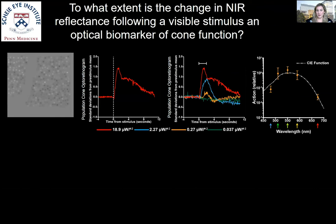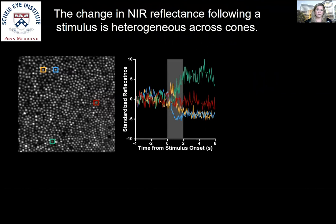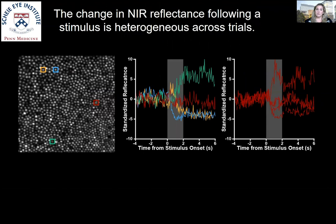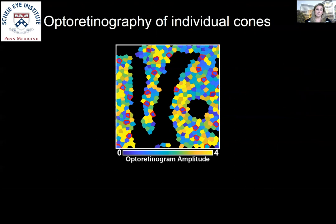All measurements so far have been over a population of cones, so we then wanted to know whether we could measure an opto-retinogram across individual cones. The change in near-infrared reflectance is heterogeneous across cones and also heterogeneous across trials. We can therefore pool signal across multiple trials of the same cone rather than pooling across multiple cones within the population. In this way, we can determine an individual cone opto-retinogram and assign each cone its own functional response based upon its change in near-infrared reflectance following the visible stimulus.